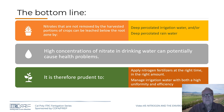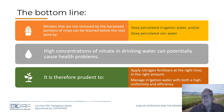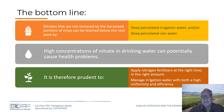To repeat the bottom line: nitrates not removed by the harvested crop remain in the soil water solution, and if water deep-percolates from rainfall or irrigation, it can move below the root zone. High concentrations of nitrate in drinking water can potentially cause health problems, specifically for infants and pregnant women. It is prudent to apply nitrogen fertilizers at the right time and in the right amount — this is where fertigation really comes in.